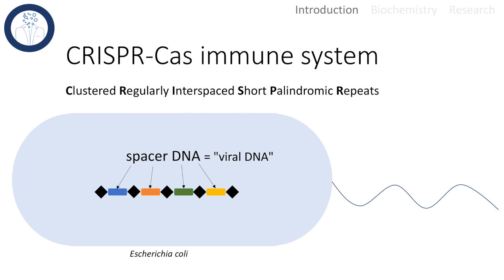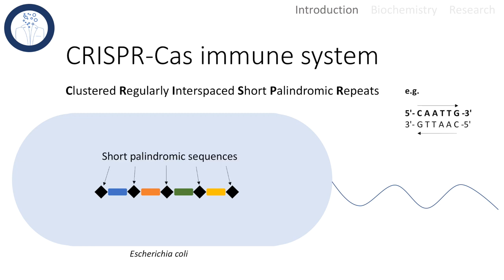The CRISPR array consists of the spacer DNA, which are viral sequences from former infections, and in between we have these short palindromic repeats. A palindromic sequence means that no matter if you read it from 5 to 3 prime or from 3 to 5 prime direction, you will have the same nucleotide sequence.